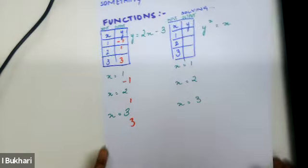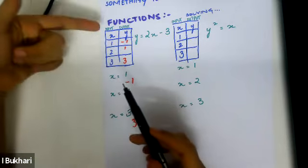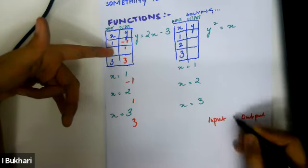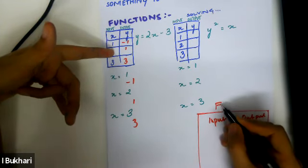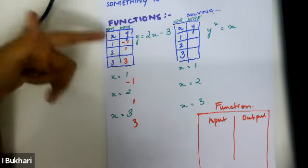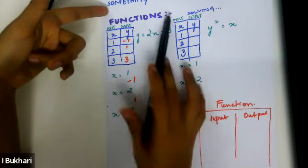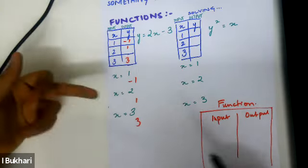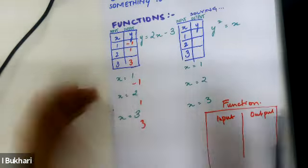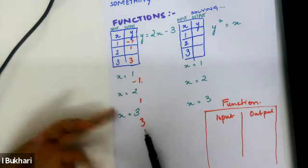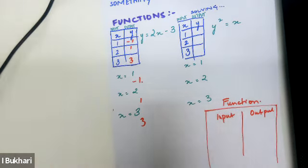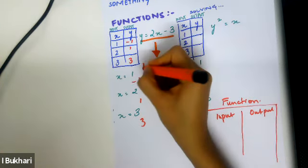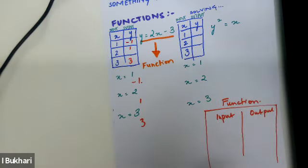You can see that for each x value — the input — we get exactly one output. The input is always on one side of the table, the output on the other, with the function written on top. For x equals 1 we got y equals negative 1, x equals 2 gives y equals 1, x equals 3 gives y equals 3. Each input has a single output, so this is a function.